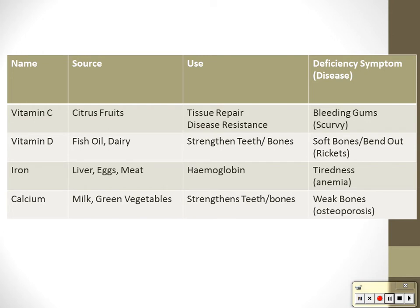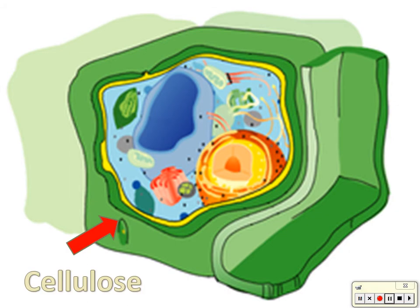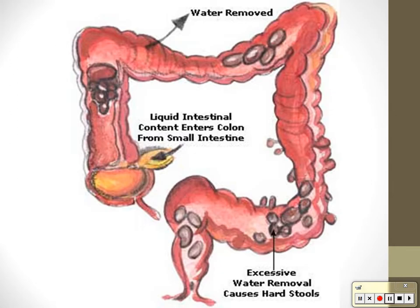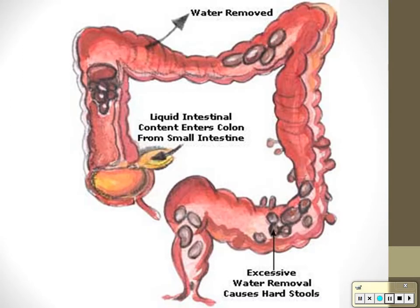There's a table for you — most of this should be put into tables or flashcards. Fiber provides bulk to our food and helps absorb poisons. Fiber comes from cellulose and we cannot digest it — it helps give our intestines something to push against. A lack of fiber results in constipation. And the last nutrient is water — you can live a couple of weeks without food but not very far without water.